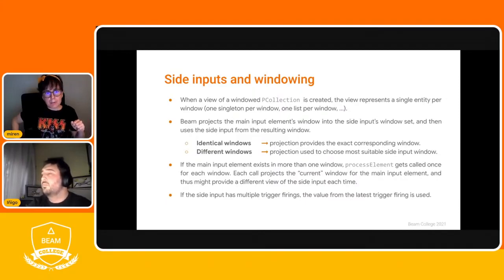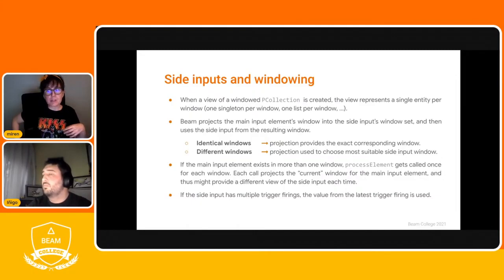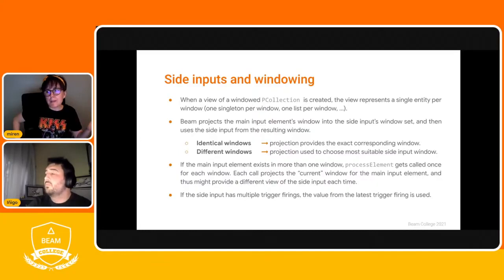A couple more things to consider: when the main input element exists in more than one window — for instance, when using sliding time windows — the element is processed once for each window, projecting the current window for the main input element, which can result in a different view of the side input each time. Finally, if the side input has multiple trigger firings, the value from the latest trigger firing is the one that will be used.